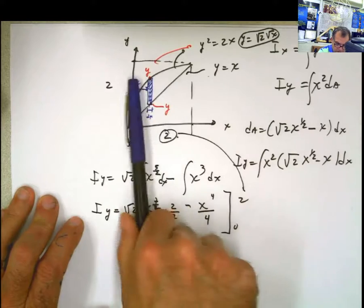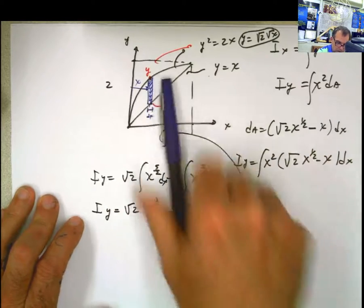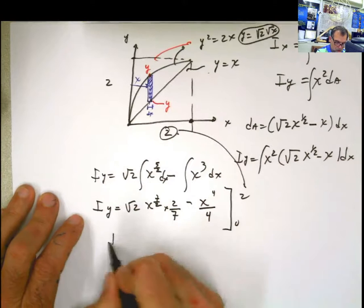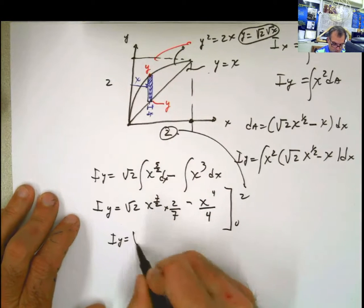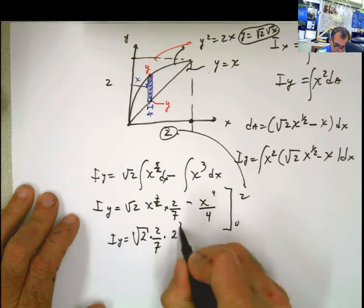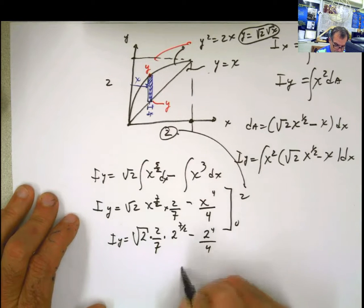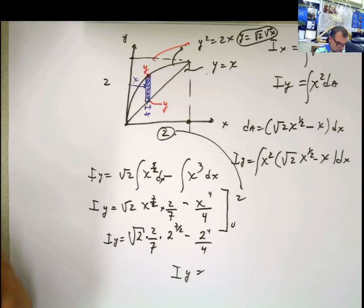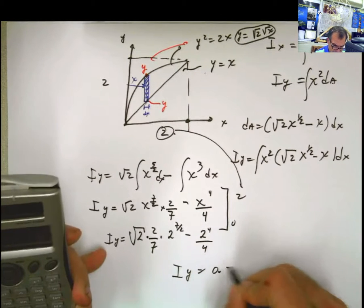You have to be aware of what you are doing. This is the limit I'm looking for. So I_y equals square root of 2 times 2/7 times 2 to the 7/2 minus 2 to the fourth divided by 4. Using the calculator: square root of 2 times 2 divided by 7 times 2 to the 3.5 minus 16 divided by 4 equals 0.571.